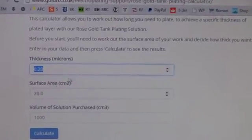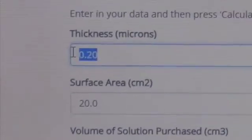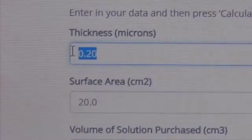The recommended thickness for rose gold tank plating deposits is between 0.1 and 0.5 microns. For this video we'll be plating the test strip to a thickness of 0.2, so this is the figure entered into the calculator.